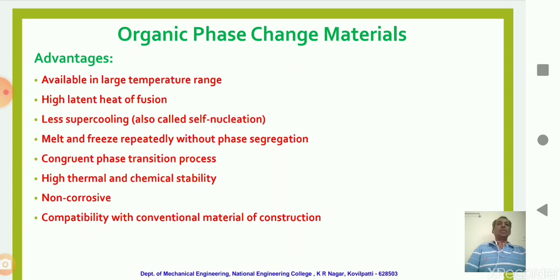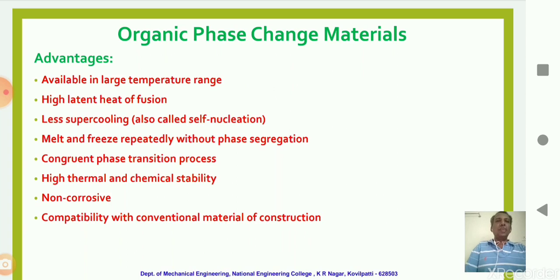Further advantages of organic PCMs include: repeatable melting and freezing without phase segregation; congruent phase transition — meaning phase transition occurs without any chemical decomposition; high thermal and chemical stability; non-corrosive nature; and compatibility with conventional materials of construction used in buildings and thermal energy systems.